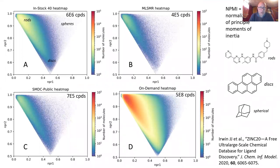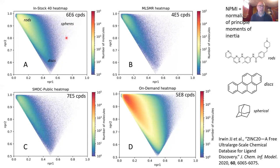One downside we thought with ultra-large libraries was that since they're based on a limited number of building blocks and routes, chemical diversity might not be great. But looking at four different chemical libraries plotted in shape space — rod-like, disc-like, and spherical — we see that a physical library has a lot of rod-shaped molecules and not many spherical ones, whereas the ultra-large virtual library actually explores that shape space pretty well, including under-sampled regions. The diversity in these virtual chemical libraries is actually really good, better than anticipated.